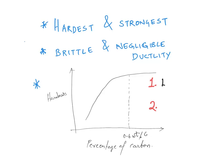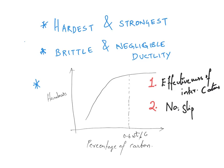So the first factor is the effectiveness of your interstitial carbon atoms in preventing dislocation motion. Similarly, hardness will also depend upon the number of slip systems. Slip systems are the directions along which dislocations move, causing plastic deformation. The fewer the number of slip systems in your crystal structure, the harder it will be.